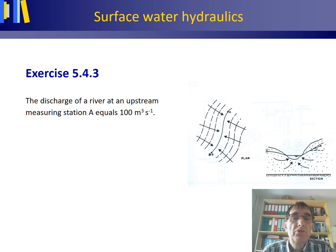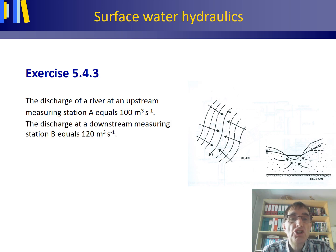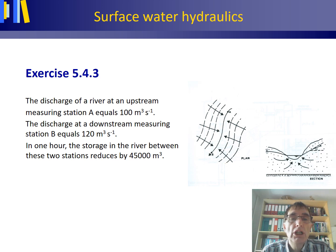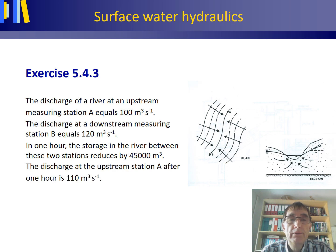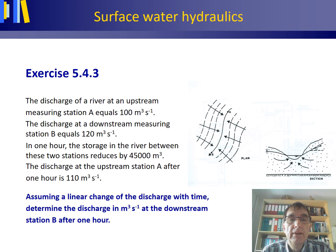The discharge of the river at the upstream measuring station A equals 100 cubic meters per second, and at the same time the discharge at the downstream measuring station B equals 120 cubic meters per second. In one hour, the storage in the river between these two stations reduces by 45,000 cubic meters. After this one hour, the discharge at the upstream station A is 110 cubic meters per second. Assuming a linear change of discharge with time, determine the discharge in cubic meters per second at the downstream measuring station B after this one hour.